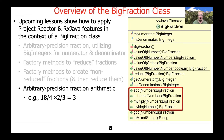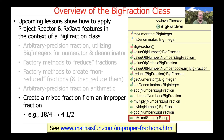Not surprisingly, there's also a whole slew of arbitrary precision fraction arithmetic methods — things like addition, subtraction, multiplication, and division. In this case, you could take a big fraction like 18/4 times 2/3, ending up with a value of 3.